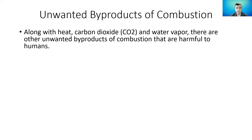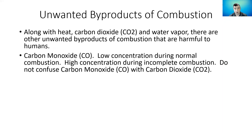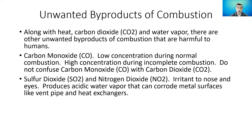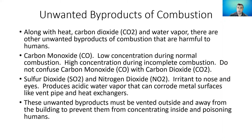Let's next talk about unwanted byproducts of combustion. Along with heat, CO2, and water vapor, there are other unwanted byproducts that are harmful to our health. Carbon monoxide is the big one. We're going to see low levels of carbon monoxide usually in the flue gases, but when we start seeing high concentrations, it's indicative that our appliance is not burning cleanly. We can also start reintroducing those high levels of carbon monoxide back inside when they collect outdoors. Sulfur dioxide and nitrogen dioxide are also unwanted byproducts — irritants to our nose and eyes, and they have acid in them. That acid gets into water vapor, which can condense and start corroding metal surfaces like vent pipes and heat exchangers. These need to be vented well outside the building to prevent them from collecting at high concentrations and being reintroduced into the building, causing health problems and damage to the appliance.